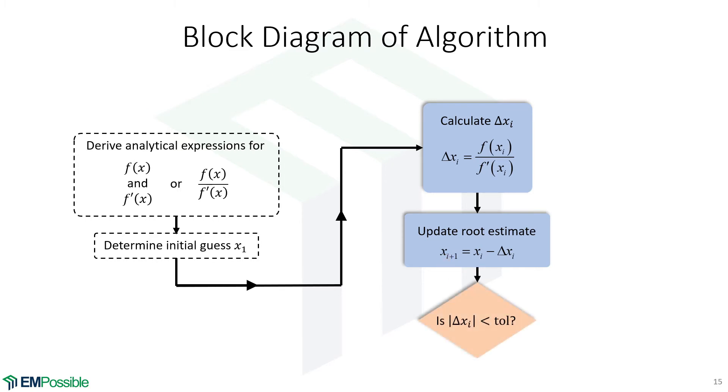Now the reason we've broken it up this way and calculated delta x separately is this is what we'll check against our tolerance that we've defined. We look at the magnitude of this, take the absolute value, and check if that falls below some tolerance that we've defined.